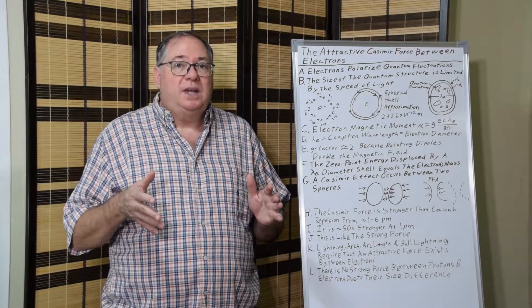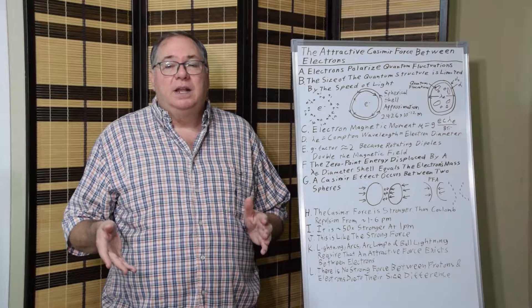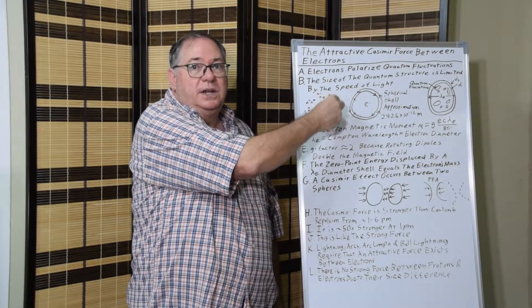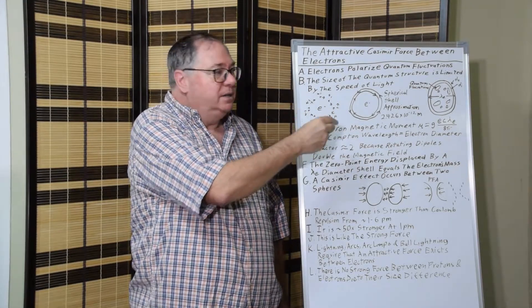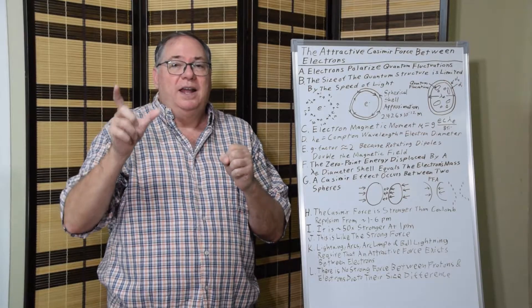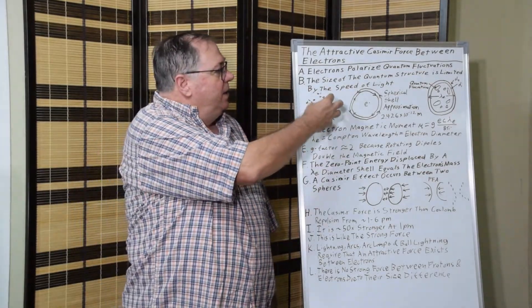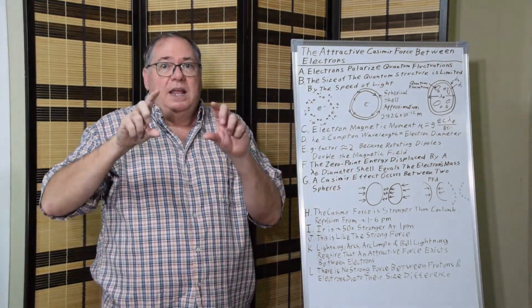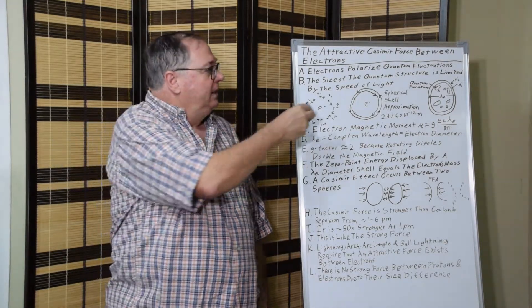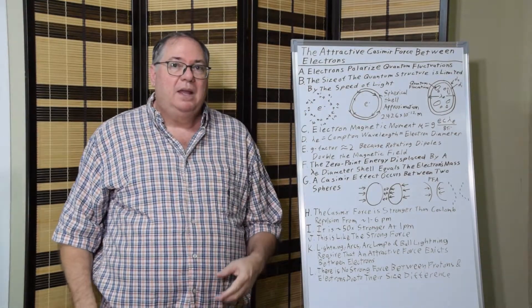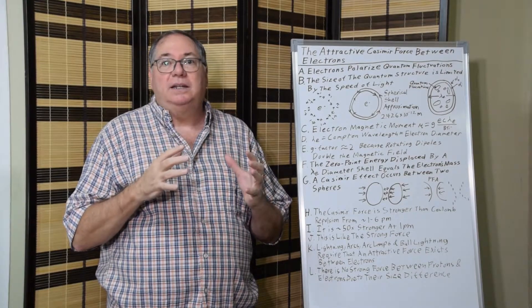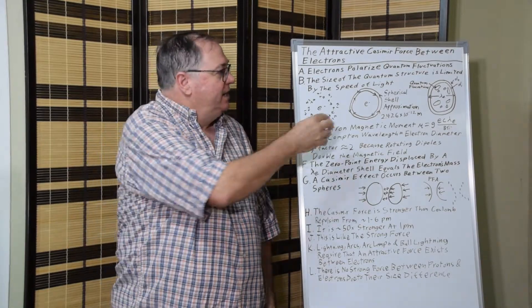The structure comes about because electrons polarize the quantum field. They're constantly polarizing the quantum field so that the electron causes quantum fluctuations, like electron-positron pairs, to polarize. So you have a negative charge here, you get a positive charge and a negative charge, and they orient themselves. But what happens is, as all these charges orient themselves, they can't move in an opposite direction because that causes like charges together. So they tend to rotate — they tend to all rotate the same way.